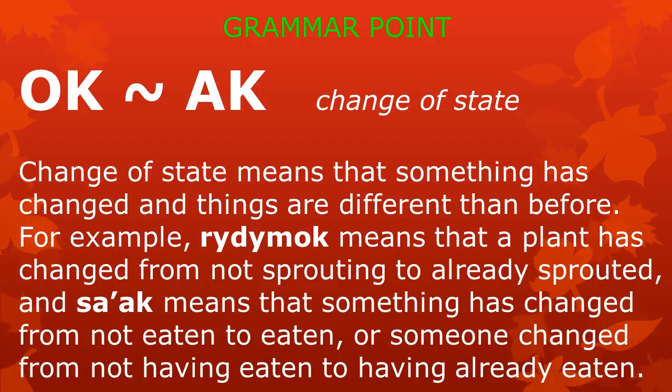The meaningful part 'ok' has another form 'ak', as in 'saak' or 'rayak'. This meaningful part indicates a change of state — something has changed and things are different than before. For example, 'redemok' means a plant has changed from not sprouting to already sprouted, and 'saak' means something has changed from not eaten to eaten, or someone has changed from not having eaten to having already eaten.